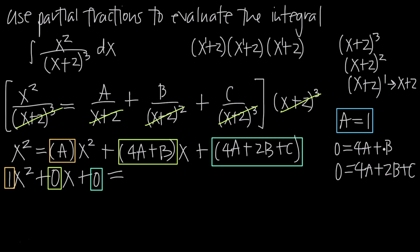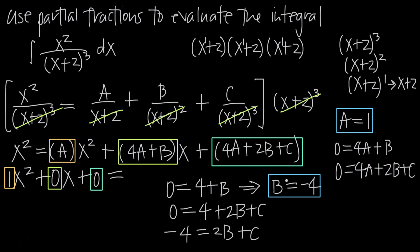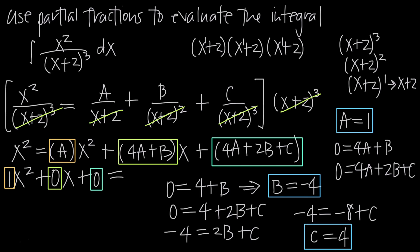Plugging a equals 1 into the first equation gives 0 equals 4 plus b, so b equals negative 4. Plugging a equals 1 into the second equation gives 0 equals 4 plus 2b plus c, so negative 4 equals 2b plus c. Substituting b equals negative 4 gives negative 4 equals negative 8 plus c, and adding 8 to both sides gives c equals positive 4. So we now have a equals 1, b equals negative 4, and c equals 4.